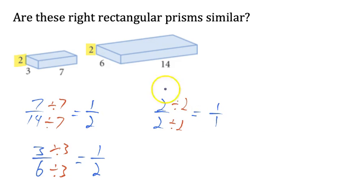But this third pair of sides does not have a ratio of 1 to 2, so these prisms are not similar.